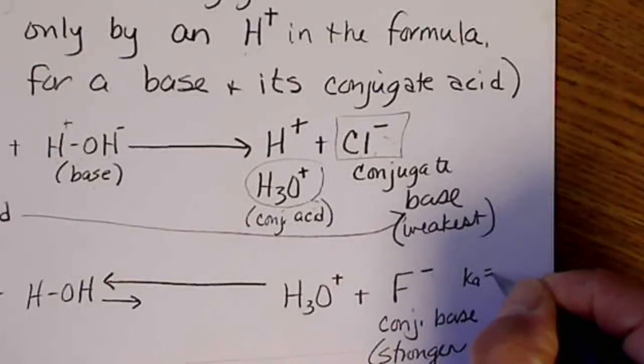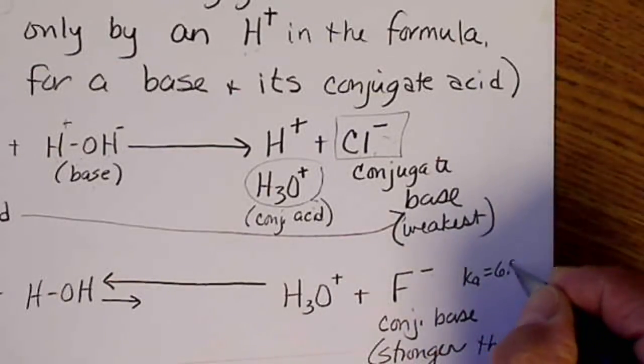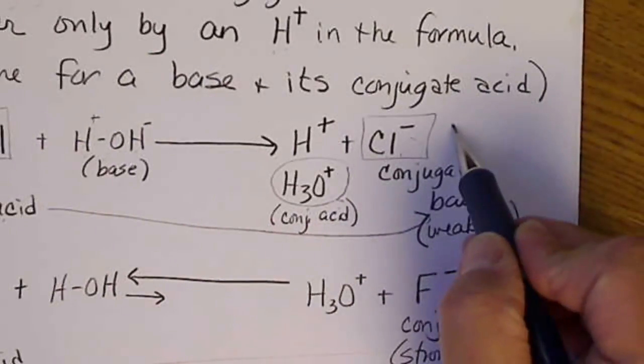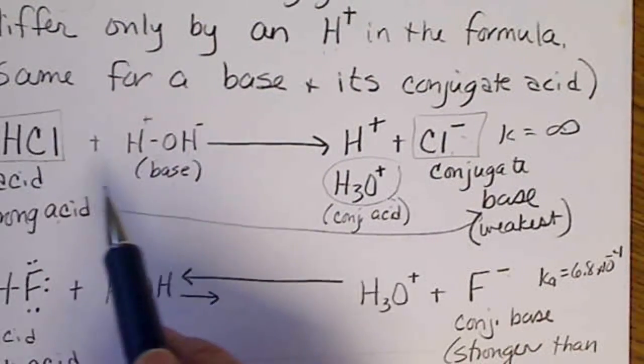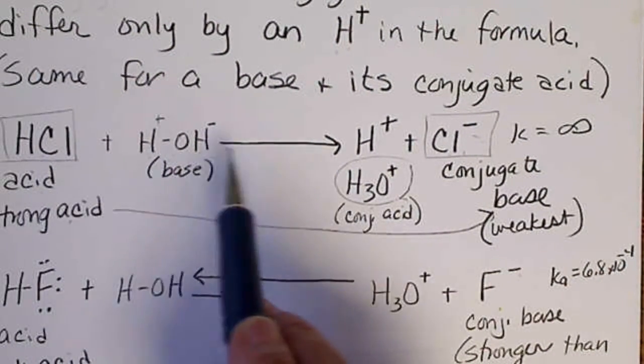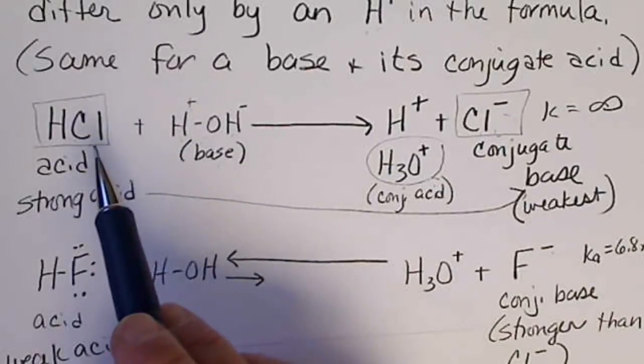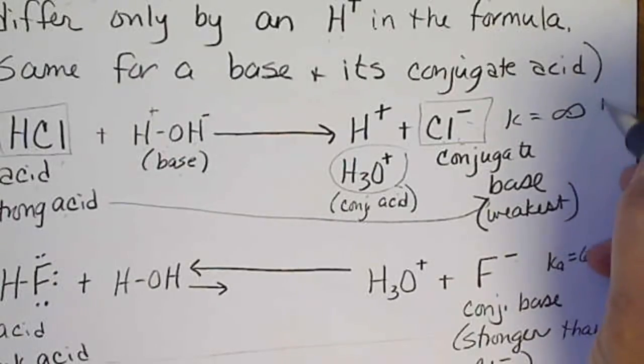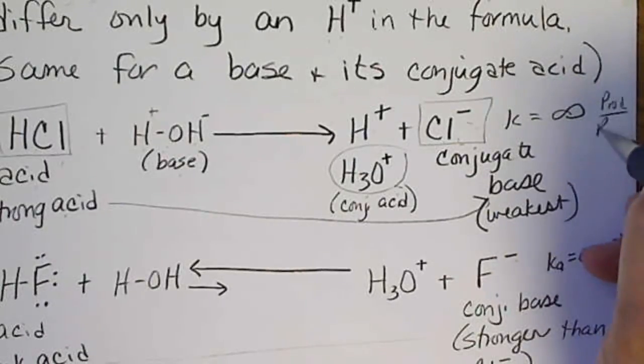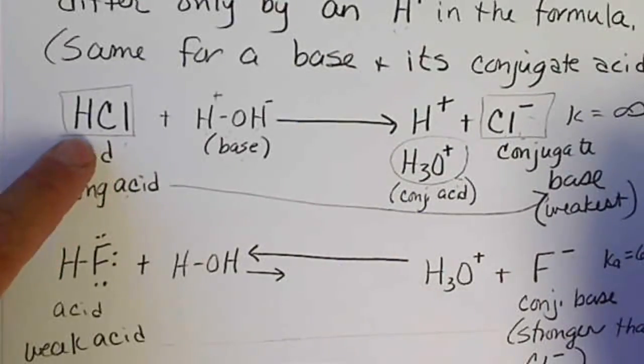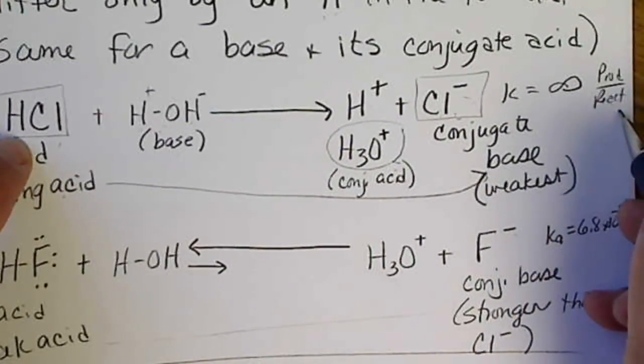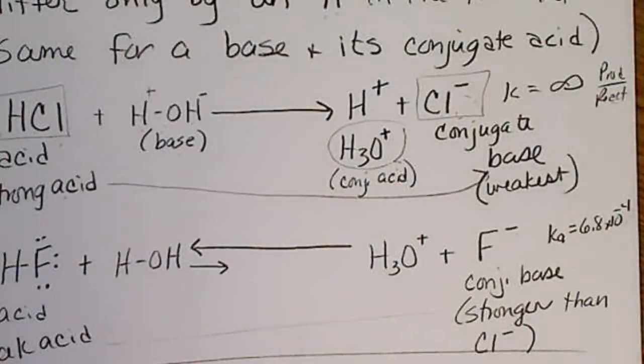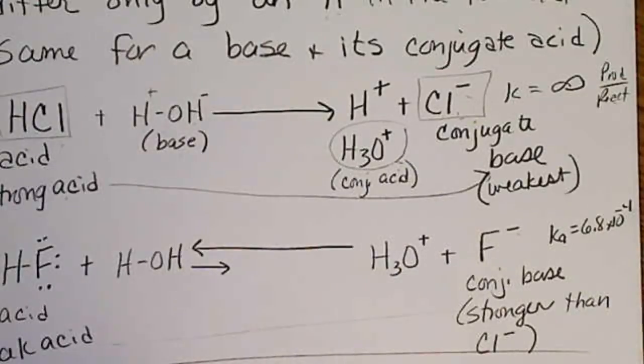So if we look back at this, here the Ka value for hydrofluoric acid is 6.8 times 10 to the minus 4. And then again here the K value would be infinity. So if we have a strong acid, that reaction proceeds all the way to the right. We have no reactants left over. So in our equilibrium expression of products over reactants, our denominator is going to be zero. If we don't have any reactants left, then that means that reaction does not come to equilibrium, which means that reaction proceeds all the way to the right.